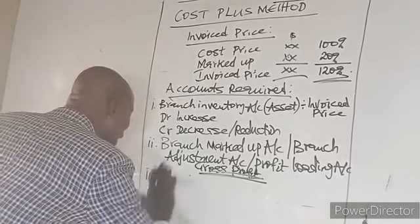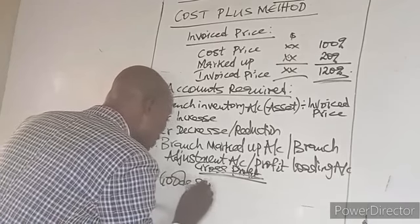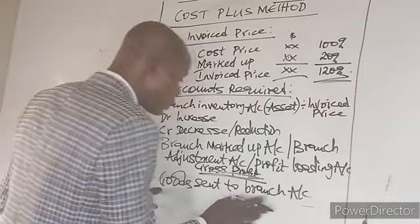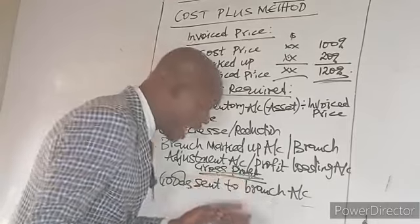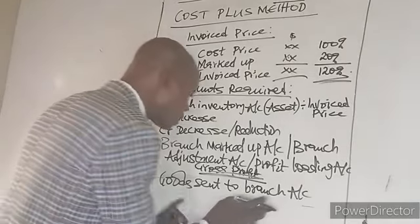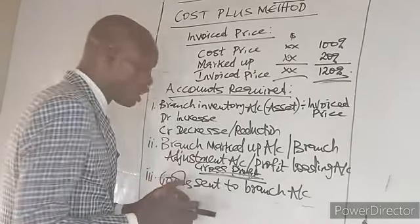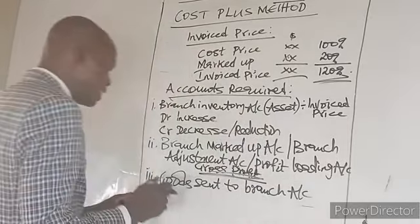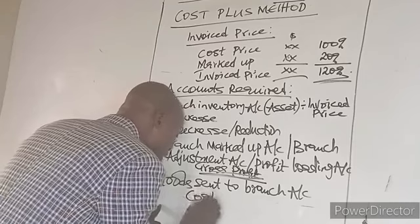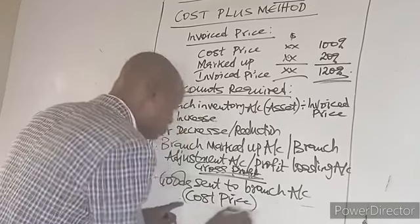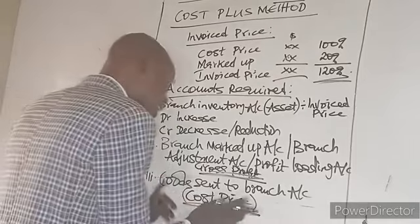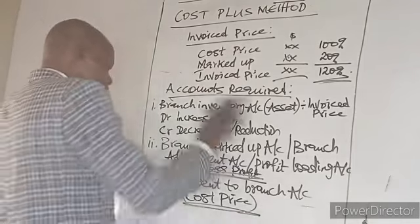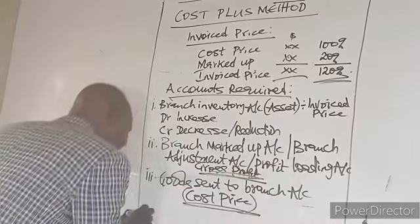Number three is the goods sent to branch account. This account records the movement of inventory between the head office and the branch. All items in this account will be recorded at cost price only — not at the invoice price. It shows the movement of inventory between the head office and the branch.